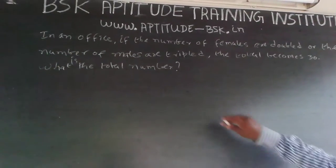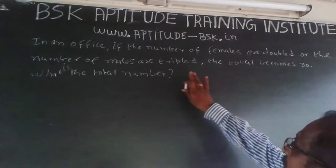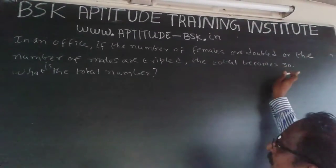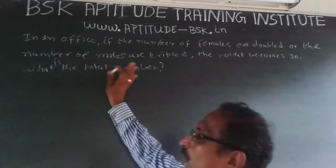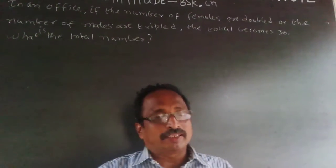The question is: In an office, if the number of females are doubled or the number of males are tripled, the total becomes 30. What is the total number now?